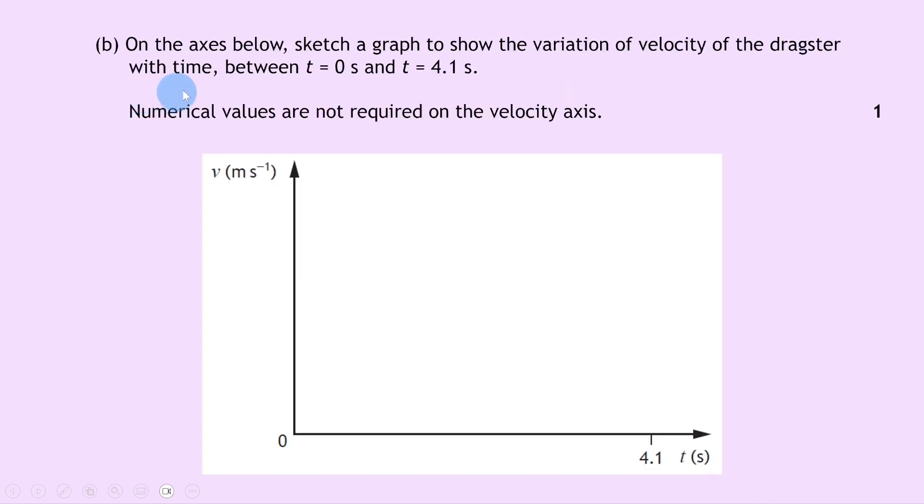Part b says on the axis below, sketch a graph to show the variation of velocity of the dragster with time between t equals 0 seconds and t equals 4.1 seconds. Numerical values are not required on the velocity axis. This question is worth one mark. We've got v in metres per second on the y-axis, time in seconds on the x-axis, and this time of 4.1 seconds labelled here.